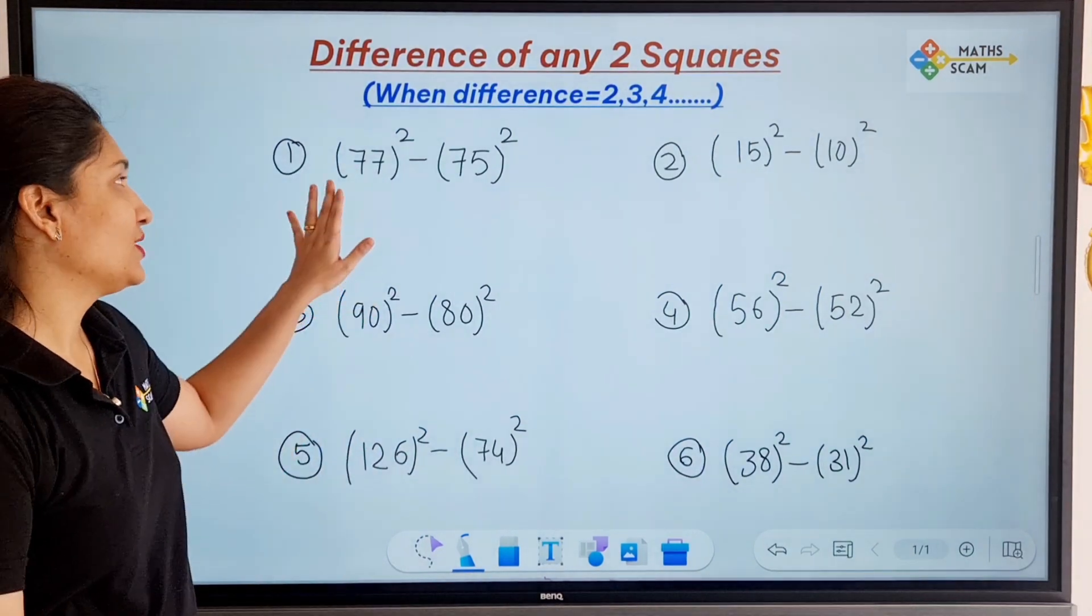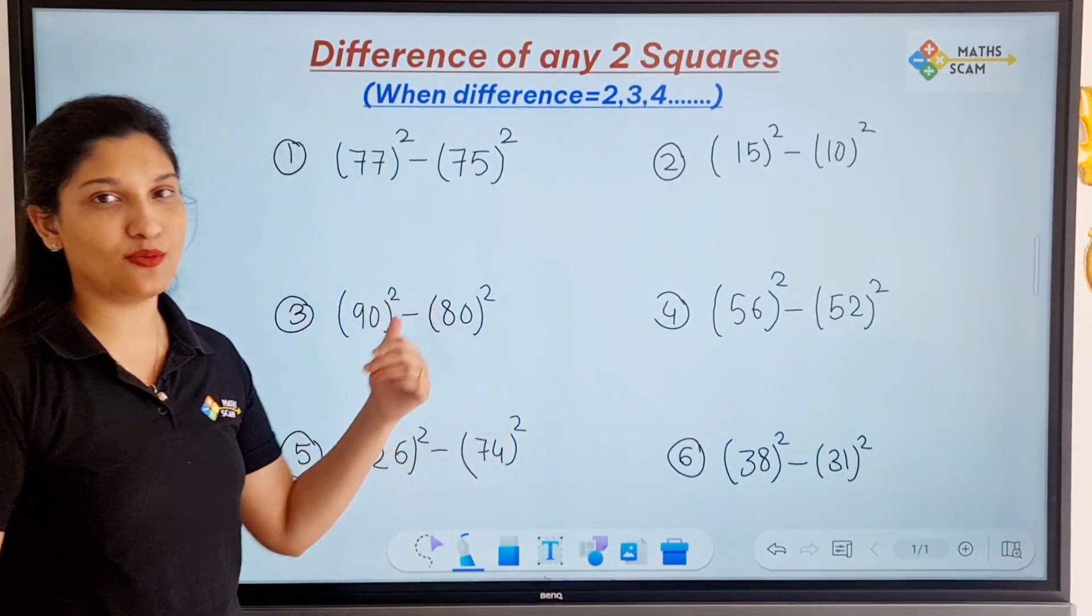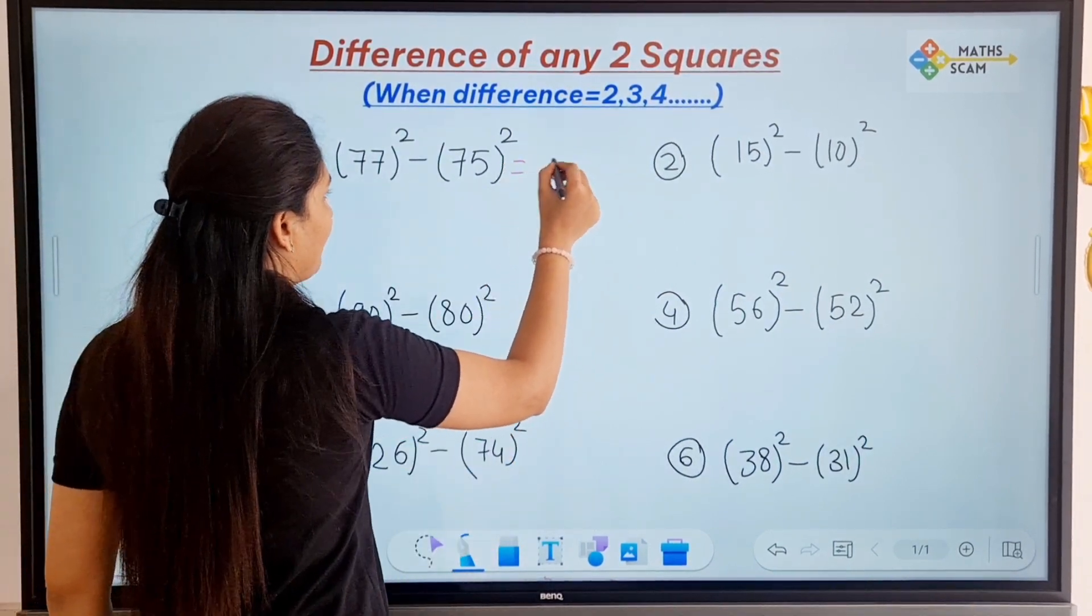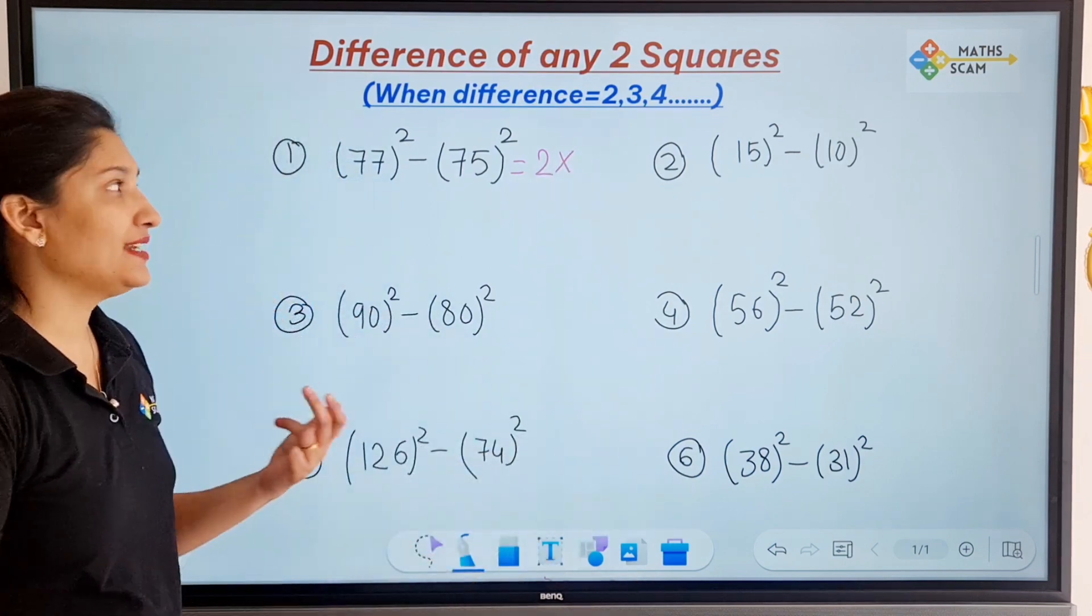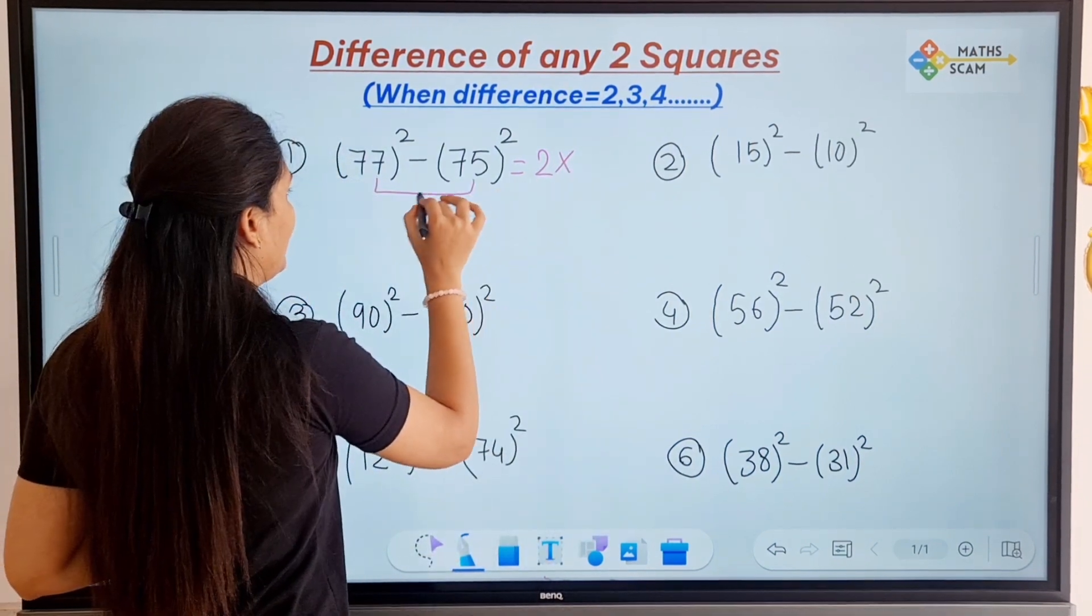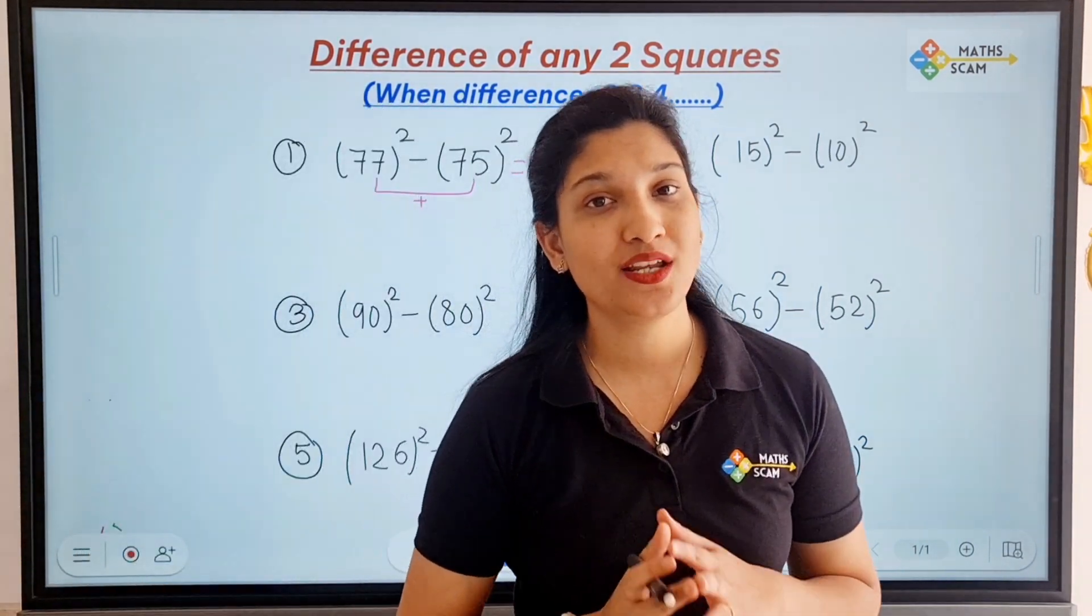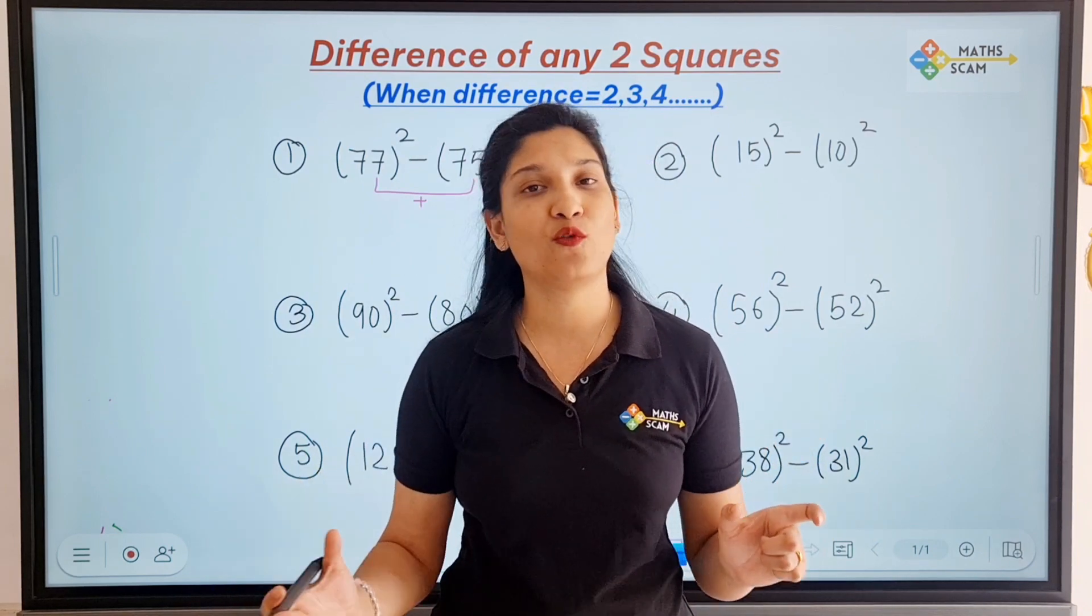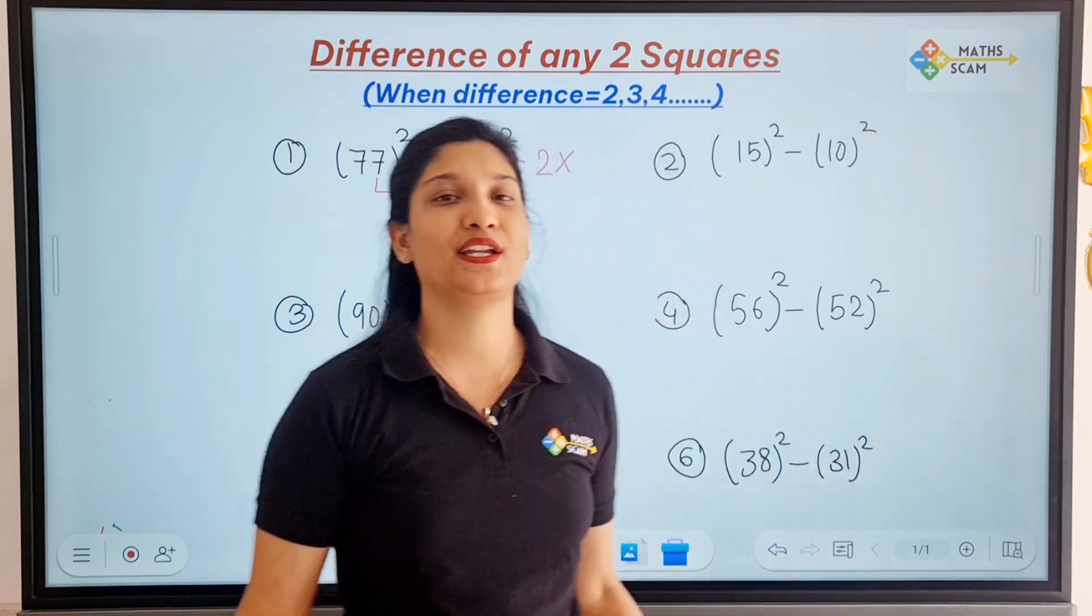So the question is 77 square minus 75 square, where the difference is 2, right? So what we have to do is first we have to find out the difference, then multiply, and then we have to do addition. So in the previous one we did only addition. Why? Because the difference is 1, so the addition multiplied by 1 will give you the same addition. That's why we did only addition.